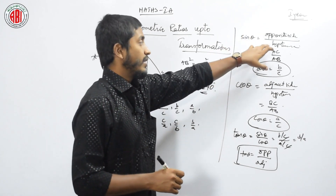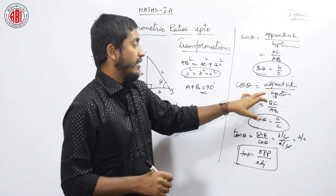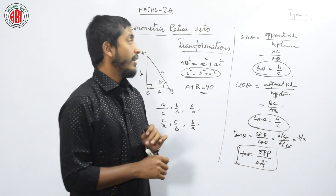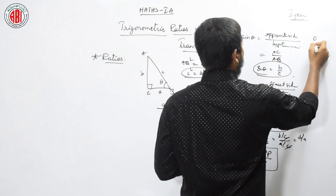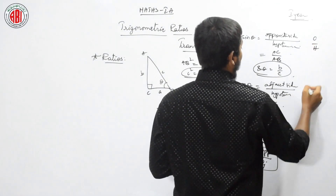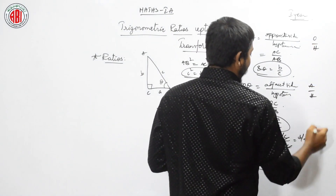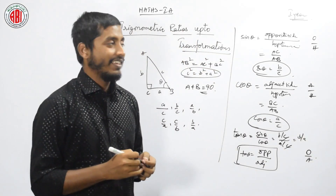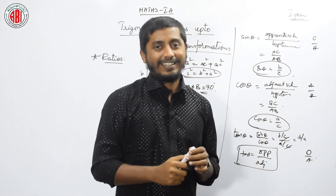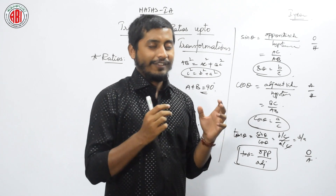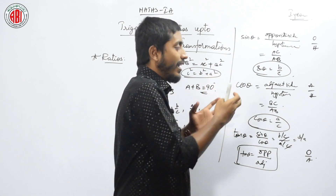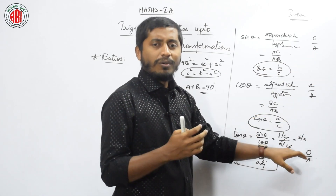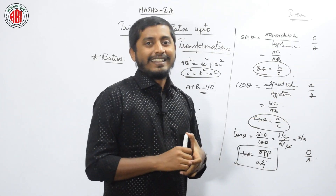What is sin θ? Opposite by hypotenuse. What is cos θ? Adjacent by hypotenuse. What is tan θ? Opposite by adjacent. This is O, A, O — you can remember it like this. You can remember in any way; this is my kind of remembering these three things: O, A, O.